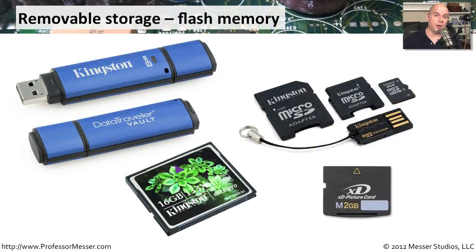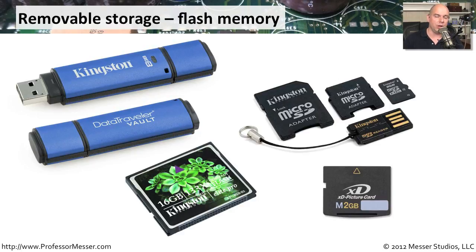If you've worked with mobile devices, you've probably worked with flash memory formats. Flash memory has the nice characteristic of storing information and then being removable from a device without requiring power to maintain the data. We're most accustomed to seeing USB flash memory storage devices. On older components you'll also find compact flash formats — relatively large compared to others, available in 16 gigabytes and larger. There's also the microSD format, standard SD, microSD, and miniSD. You can plug those into a USB reader. Another less-common format is XD, very common on portable cameras — a proprietary format you'll run into every now and again.